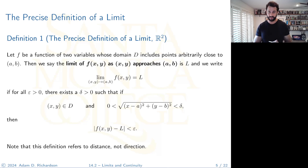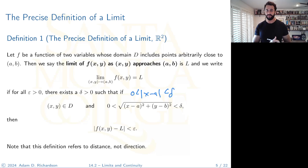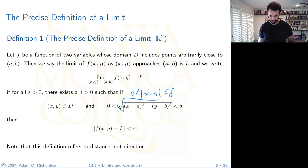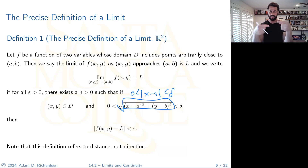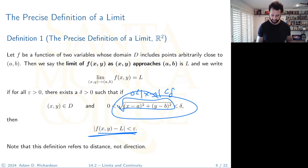The key difference compared to single-variable calculus is the distance formula. In one dimension the distance formula is just absolute value. Now that we're in two dimensions we use the more general Euclidean distance formula. This distance is not bi-directional — it's any-directional. No matter which way you approach the point, the distance is getting small, and if that distance gets small, the output distance gets sufficiently small too.